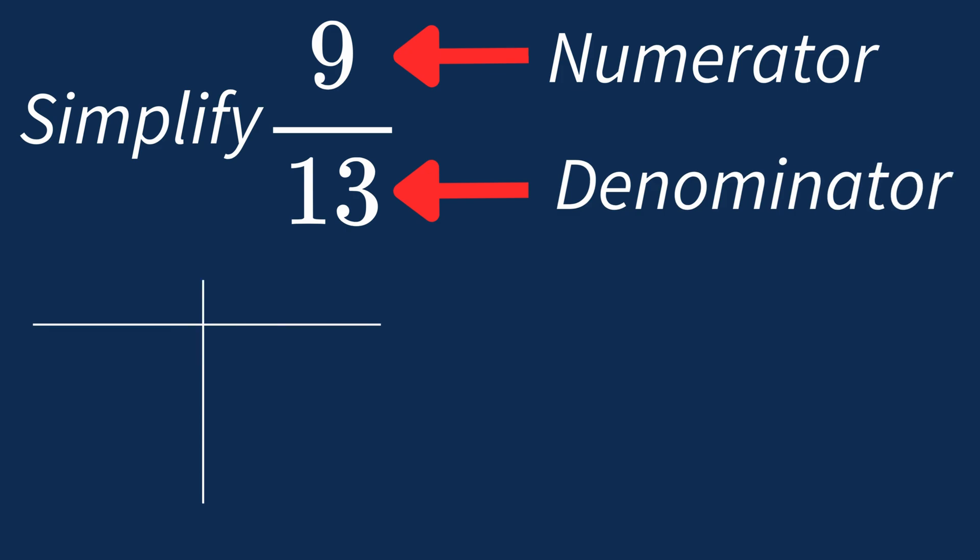First, let's list out the factors for each. For 9, the factors are 1, 3, and 9. For 13, the factors are 1 and 13.